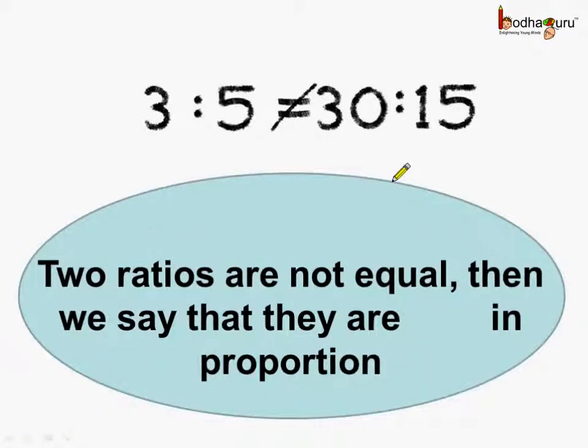Now what do we see? 3 is to 5 is not equal to 30 is to 15. So we can say that the 2 ratios are not in proportion. Remember, when 2 ratios are not equal then we can say that they are not in proportion.